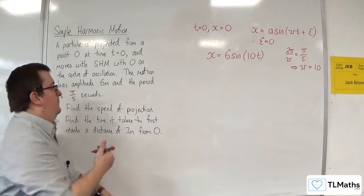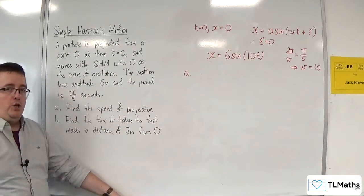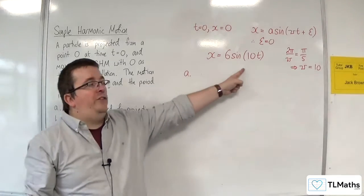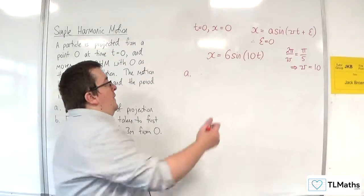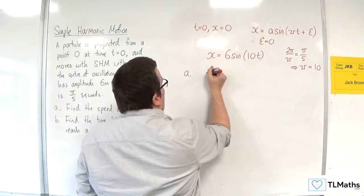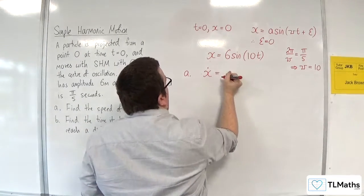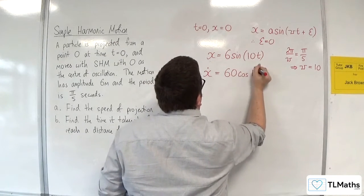So given that, now find the speed of projection. Now here we've got the displacement of the particle, so the velocity of the particle would be dx by dt, or x dot. And that would be equal to 60 cosine of 10t.